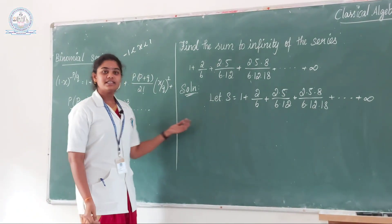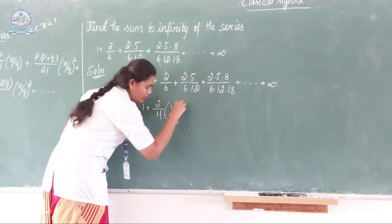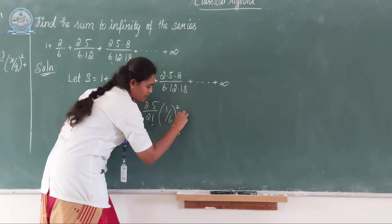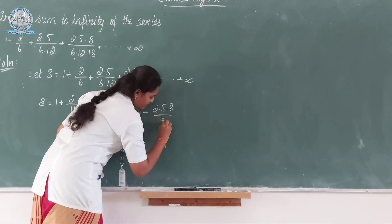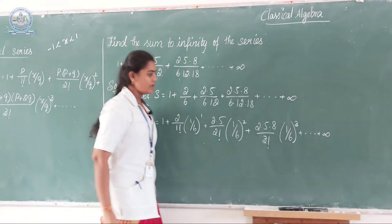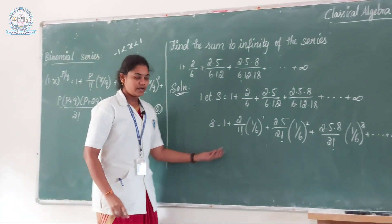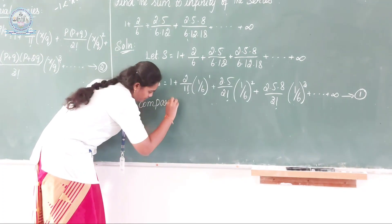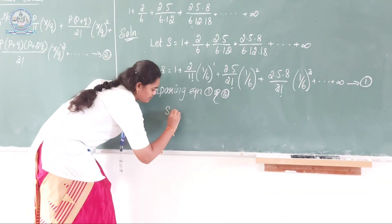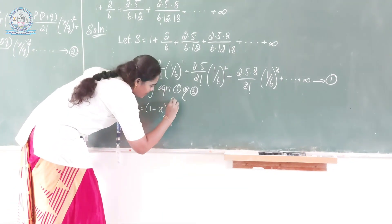Now this equation is written in the binomial series formula form. We may write s equal to 1 plus 2 over 1 factorial times (1 by 6) to the power 1 plus 2 dot 5 over 2 factorial times (1 by 6) squared plus 2 dot 5 dot 8 over 3 factorial times (1 by 6) cubed, up to infinity. We mark this as equation 1, and the binomial series definition as equation 2. Comparing equations 1 and 2, s equals (1 minus x) whole power minus p by q.